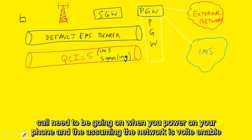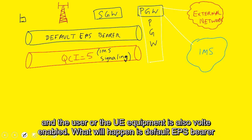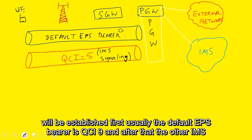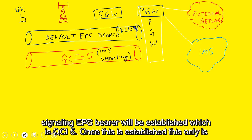When you power on your phone and assuming the network is VoLTE enabled and the UE equipment is also VoLTE enabled, what will happen is default EPS bearer will be established first. Usually the default EPS bearer is QCI9 and after that the IMS signaling EPS bearer will be established which is QCI5.